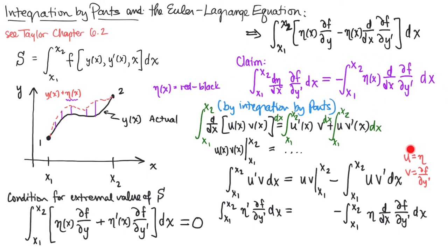Well, if u is eta, so we have here eta times df dy prime evaluated at the limits. Eta, remember, is the difference between red and black. But at the boundaries, at x1 and x2, eta is zero.